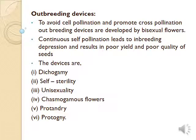The next heading is outbreeding devices. Continuous self-pollination leads to inbreeding depression, so naturally flowers have some mechanisms called outbreeding devices. First is dichogamy — maturation of stamens and pistils of a flower at different times, so that self-pollination is prevented. Next is self-sterility, where pollen grains are not able to grow on the stigma of the same flower due to similar sterile genes. Next is unisexuality. Chasmogamous flowers have well-exposed anthers and stigma, so cross pollination compulsorily takes place. Next is protandry — male parts mature before the female ones. Next is protogyny — female parts mature before the male parts.